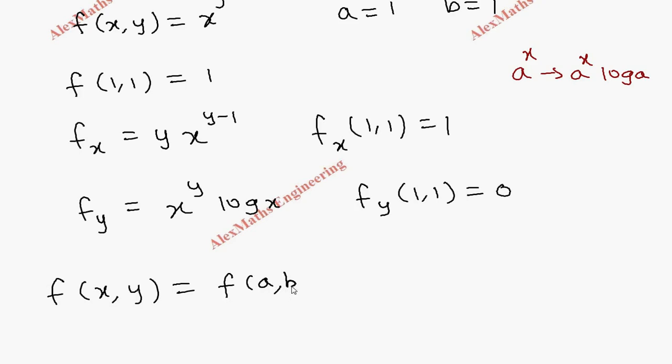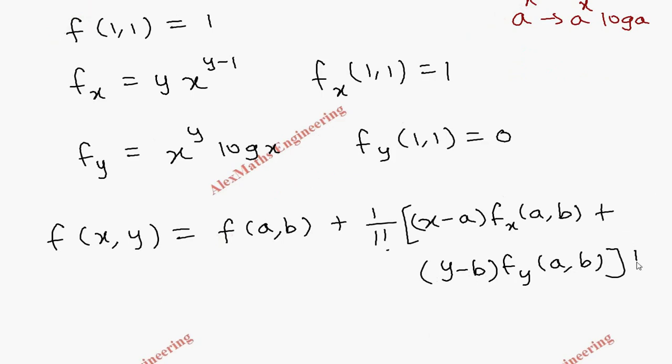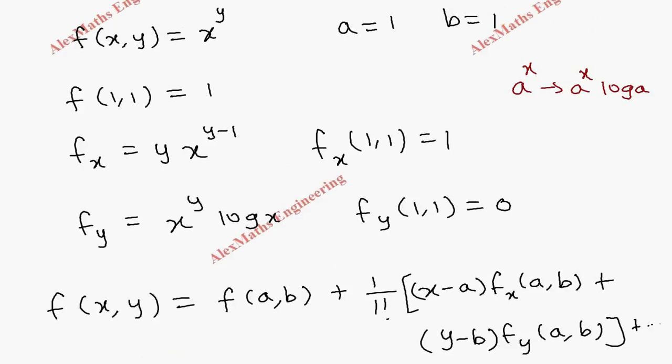plus 1 by 1 factorial into (x-a) into fx of (a,b) plus (y-b) into fy of (a,b), and so on. So we are going to write only first degree. The f(a,b) is f(1,1) which is 1.